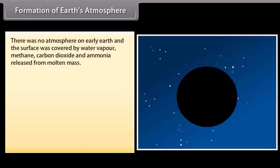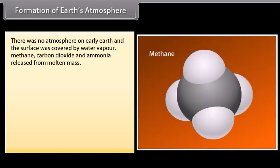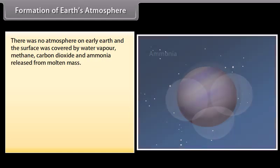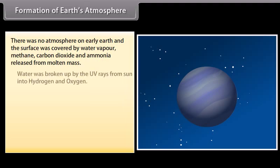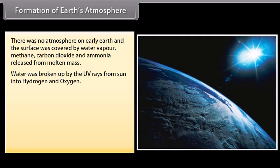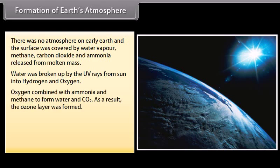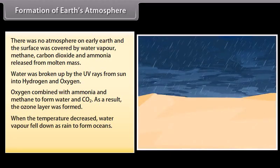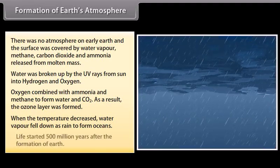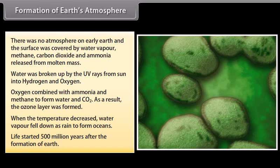Formation of Earth's Atmosphere: There was no atmosphere on early Earth. The surface of Earth was covered by water vapor, methane, carbon dioxide and ammonia released from molten mass. Water was broken up by the UV rays from the sun into hydrogen and oxygen. Oxygen combined with ammonia and methane to form water and CO2. As a result, the ozone layer was formed. When the temperature decreased, water vapor fell down as rain to form oceans. Life started 500 million years after the formation of Earth.